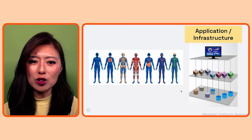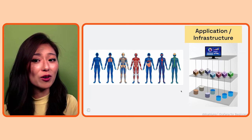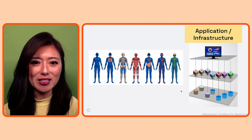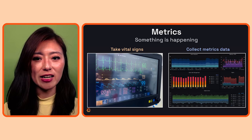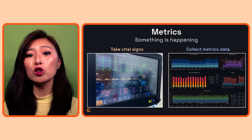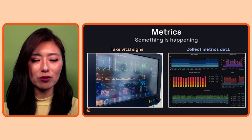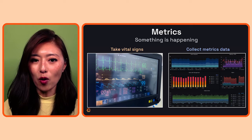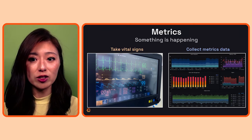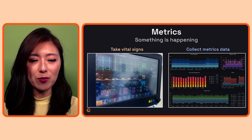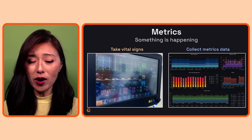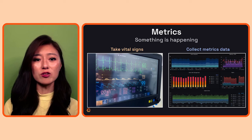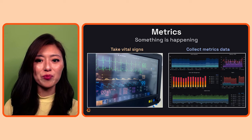Some of the most common data we collect to observe software systems are metrics, logs, and traces. Metrics are numerical data that provide clues about the health and performance of our software systems. In our previous example, we talked about collecting vital signs. When different systems of your body are functioning the way they're supposed to, these vital signs will stay within a normal range.